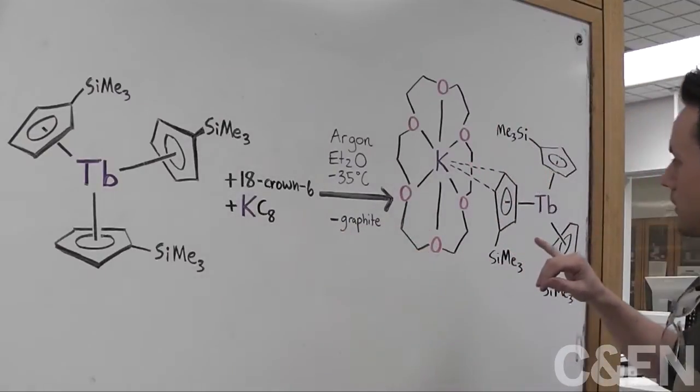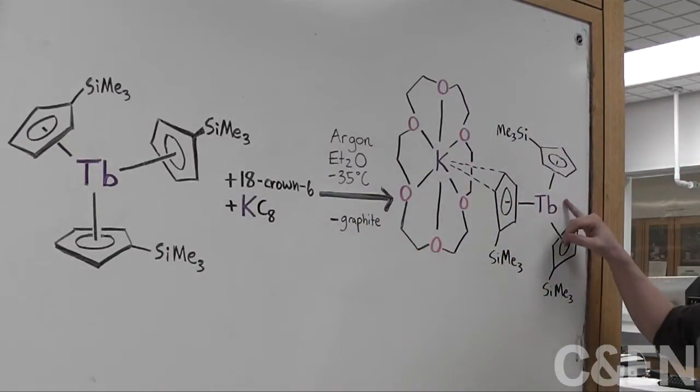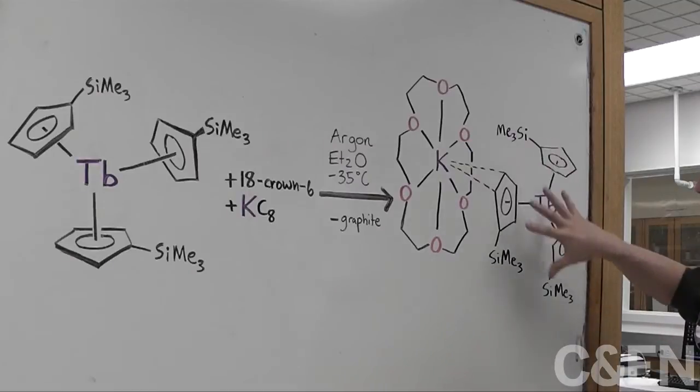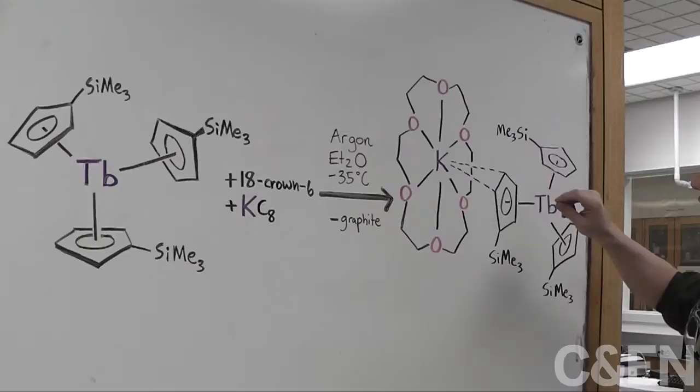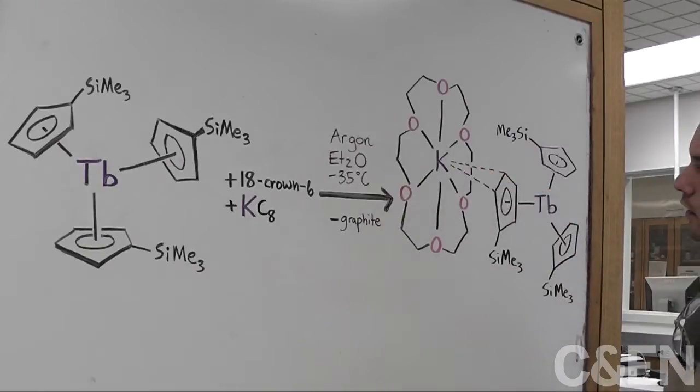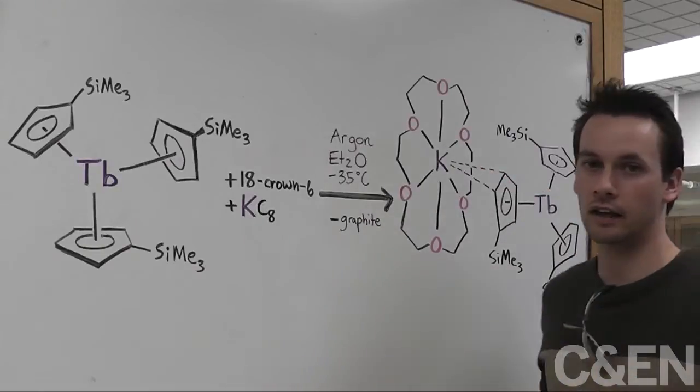And the product that we make is going to be formally a terbium 2 complex, where this Tris CP prime unit is an anion, and we have a potassium 18 crown 6 counter cation.